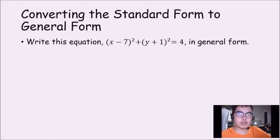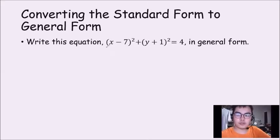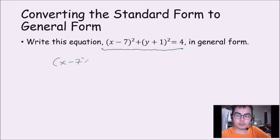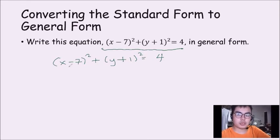Now we're going to convert the standard form to general form. Here is the standard form and another example of a standard form. What we are going to do is convert it into the general form. Keep in mind that we need to use the concepts of the square of the binomial in order to perform each of the squares, so we are going to apply this concept.